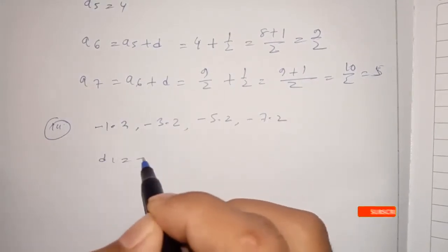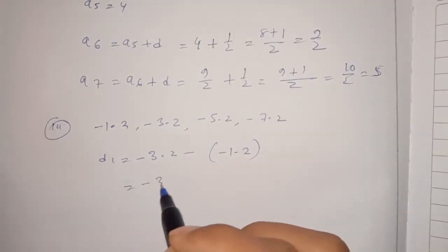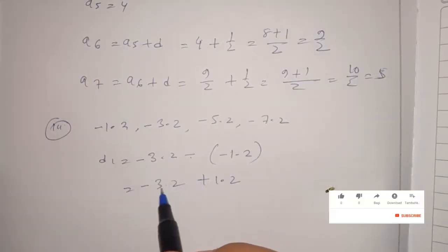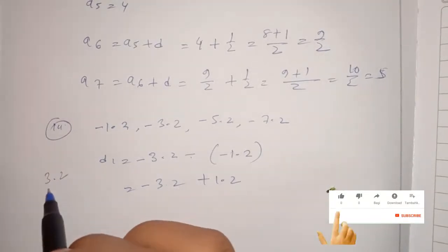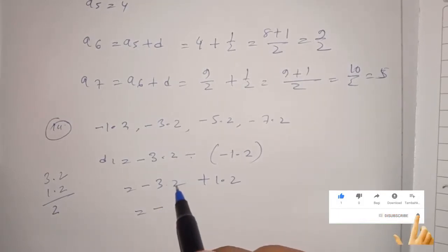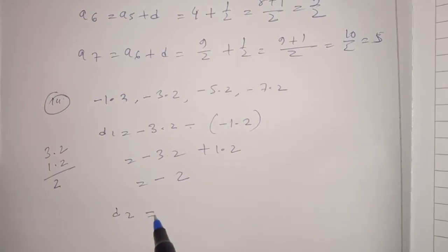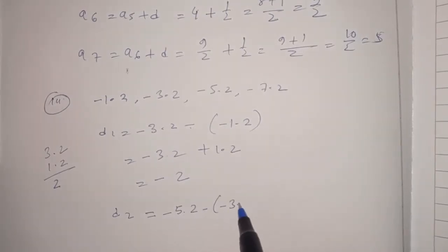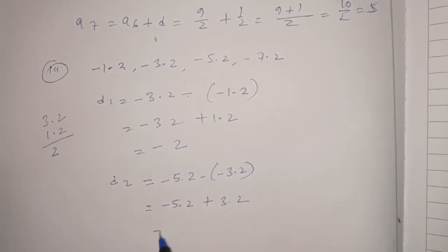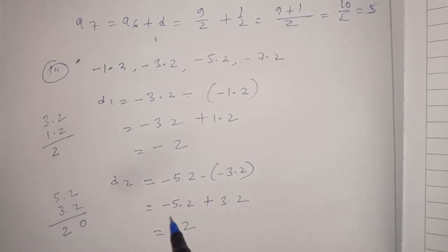D1 equal to minus 3.2 minus minus 1.2 equal to minus 3.2 plus 1.2. D2 equal to minus 5.2 minus minus 3.2 equal to minus 5.2 plus 3.2.